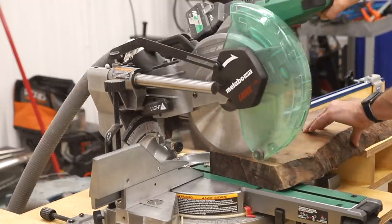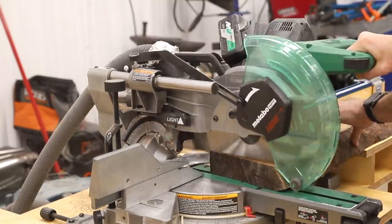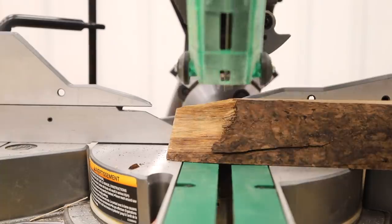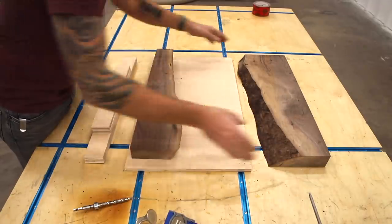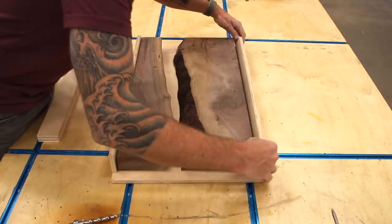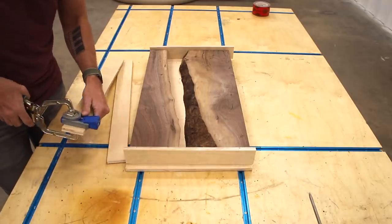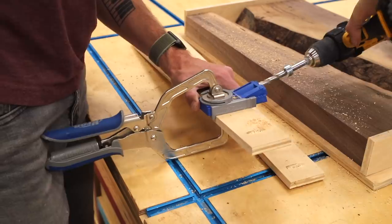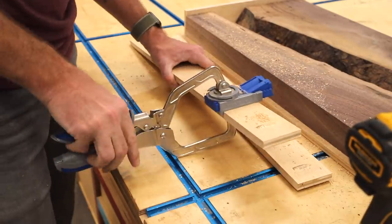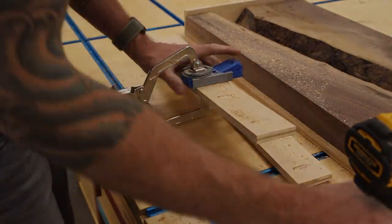Now I can cut the walnut slabs on the miter saw to fit down into that form. I'll assemble the form with some pocket screws, and I've had really good results building my forms this way lately. The pocket screws hold the form together tight enough where I'm not getting any epoxy leaking out, which always makes for a bad day.